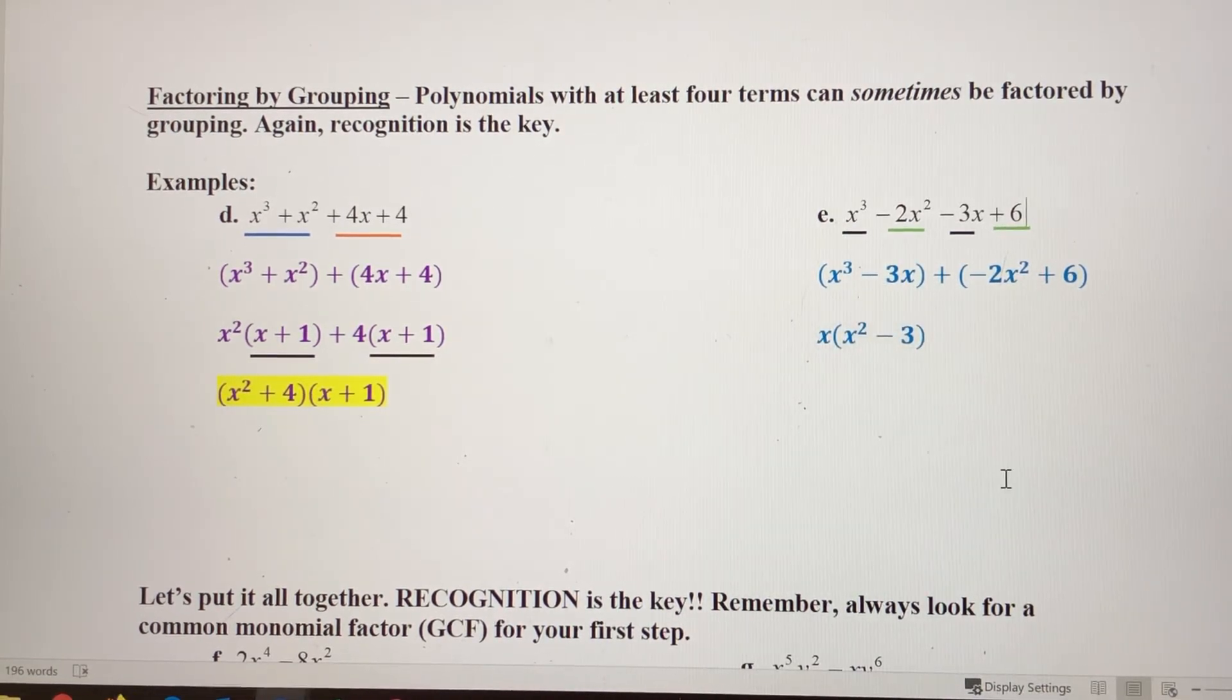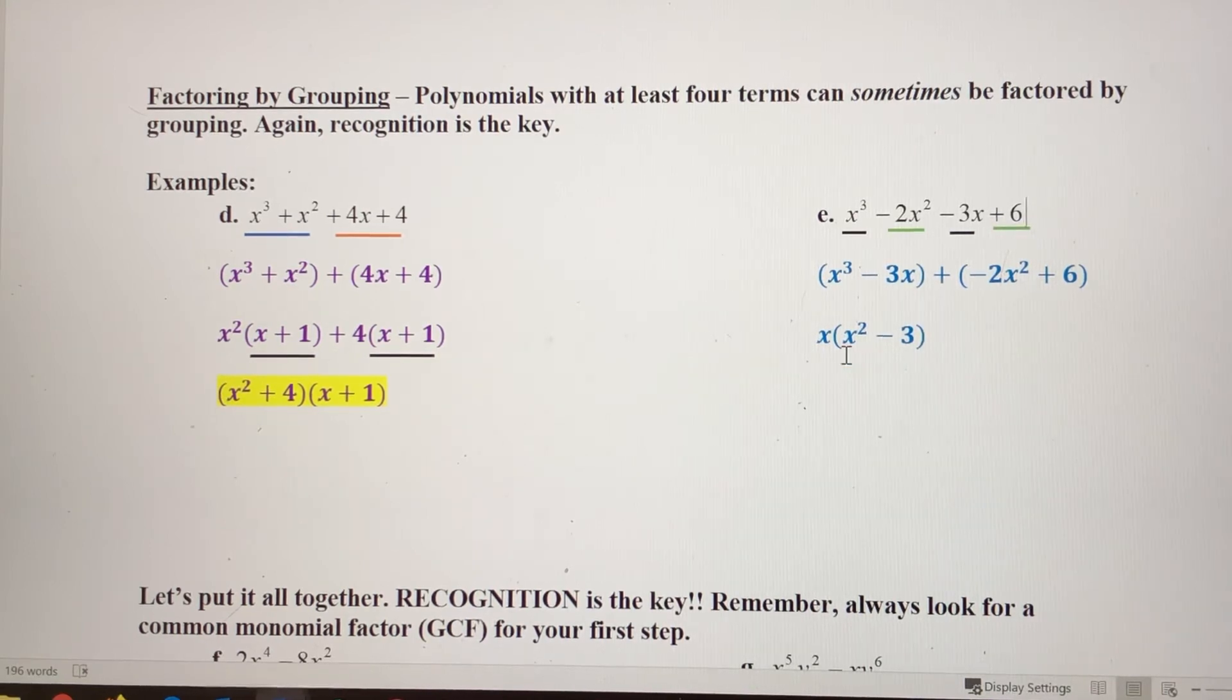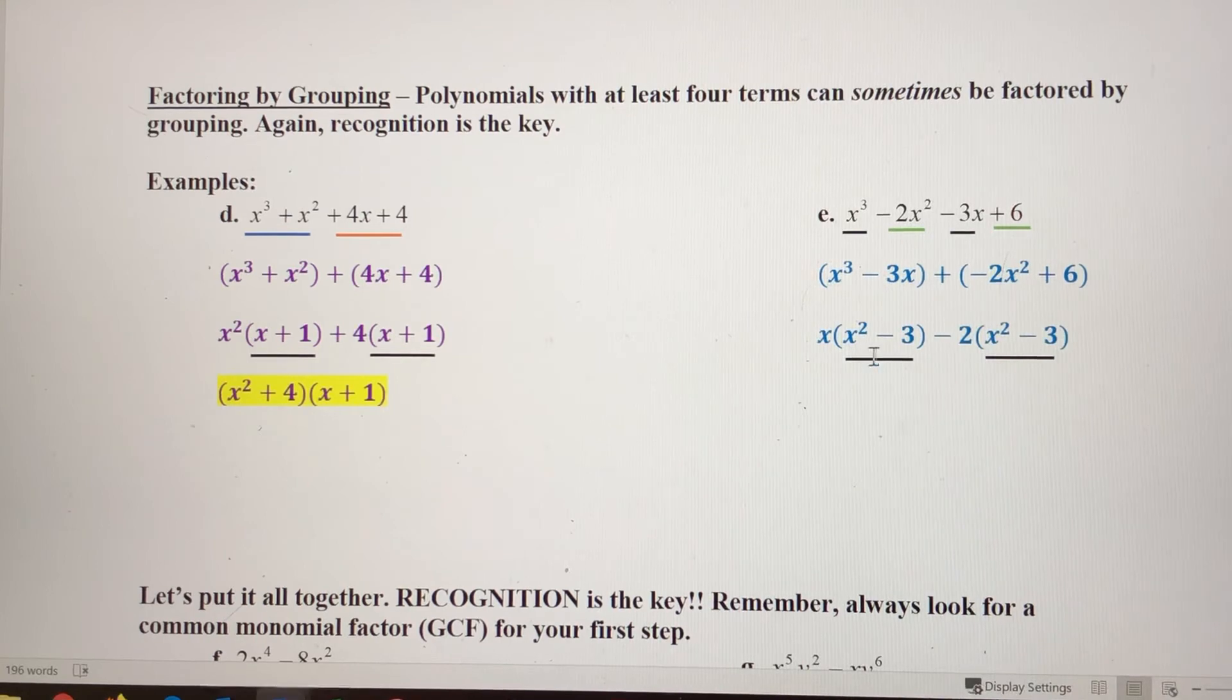In order for this, when I factor this, to match x squared minus 3, I'm actually going to have to take out a negative 2. And that's going to match up these x squared minus 3s. If you took out a positive 2 here, this binomial would have been the exact opposite of this one, and that would have told you you needed to take out a negative 2 instead of a positive 2.